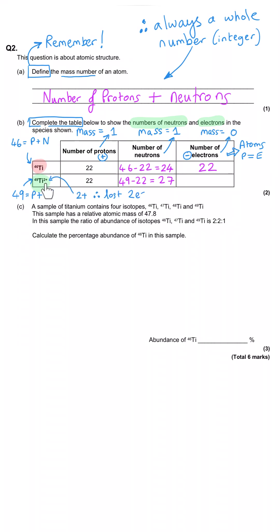In the second one, titanium has got a two plus charge. So since there are 22 protons, it would start with 22 electrons as well. But it's positive two, which means it's lost two negative electrons. So the number of electrons is 20.